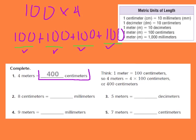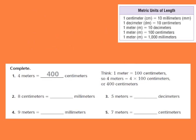Number two is saying that we have eight centimeters — equals how many millimeters? Let's look at our chart: we're going from centimeters to millimeters, and one centimeter equals 10 millimeters. I have eight centimeters, so let's draw our eight centimeters: one, two, three, four, five, six, seven, eight. Each one of those centimeters equals 10 millimeters.